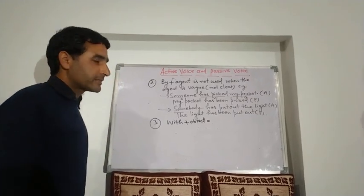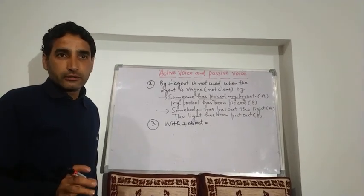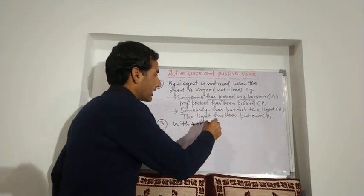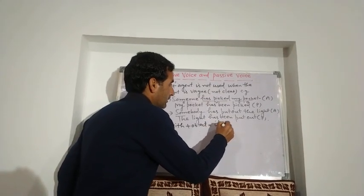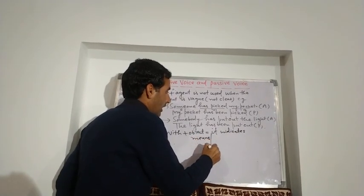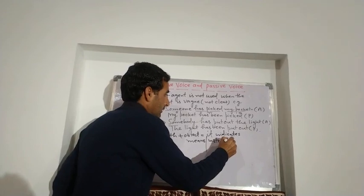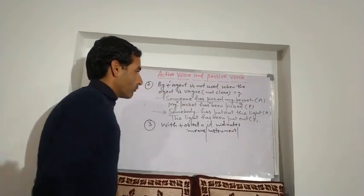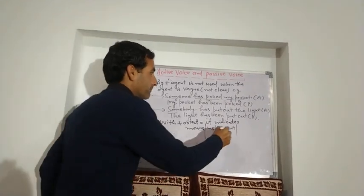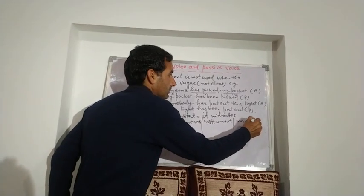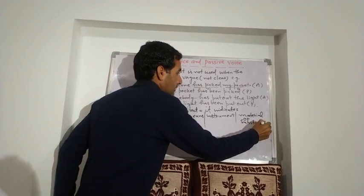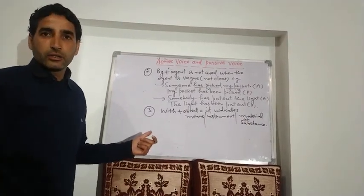Number three: there are some sentences where we use 'with' and the object. When we use 'with + object,' it indicates means or instrument, or when there is the mention of some material or substance in the sentence, we do not use 'by' — we use 'with.'